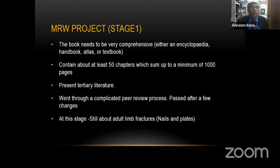The MRW, which is what the book finally became, had to be very comprehensive, almost like an encyclopedia — a handbook atlas, or like a textbook. It should have at least 50 chapters and a minimum of 1,000 pages. They said we had to present tertiary literature and go through a complicated peer review process. After discussions with their London office, they agreed, passed us to the Singapore office for paperwork, then to the New Delhi office. At this stage we were still talking about adult limb fractures.